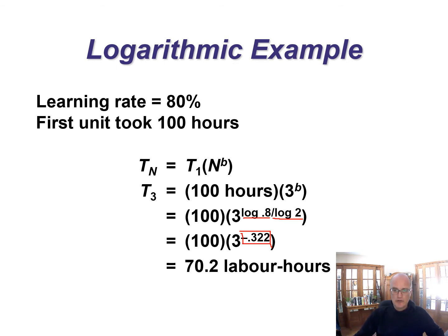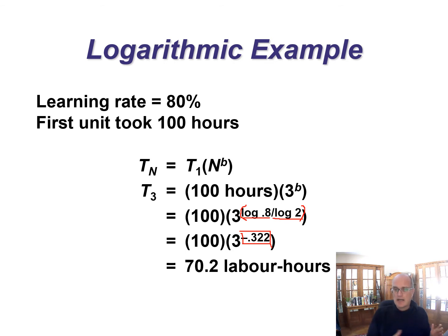A couple of hints when entering this in your calculator: put the exponent in brackets so you don't get in trouble with the order of operations. In this case, 70.2 hours is the time we expect the third unit to take — still relatively straightforward, but a little more complex than the arithmetic approach, and applicable to a wider range of problems.